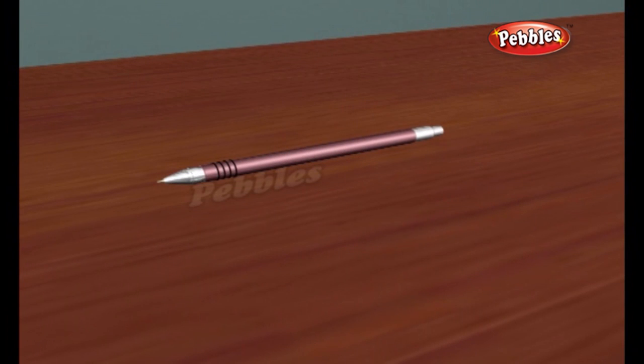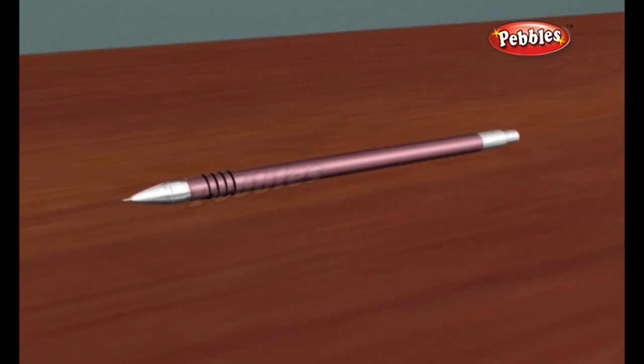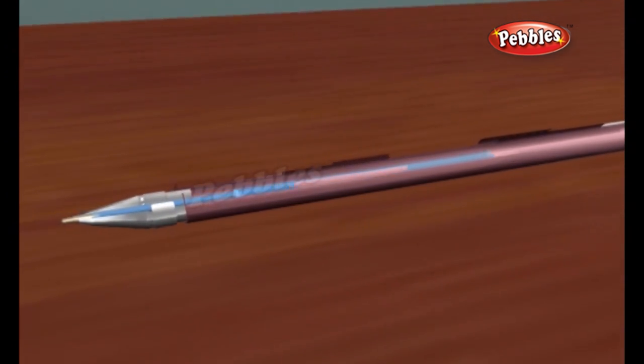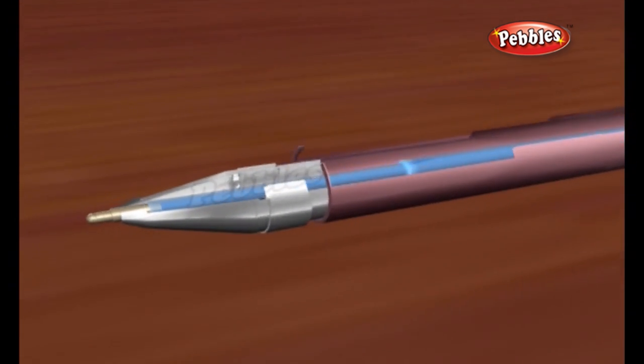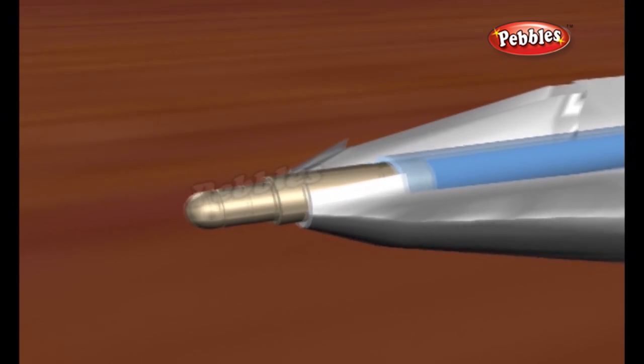The key to a ballpoint pen is of course the ball. The tiny ball is held in a socket and the back of the ball is exposed so it can pick up ink from the reservoir. This ball acts as a buffer between the material you are writing on and the quick-drying ink inside the pen.